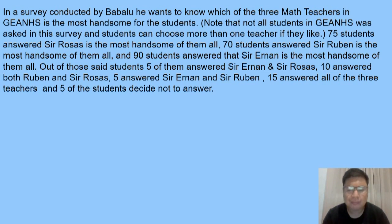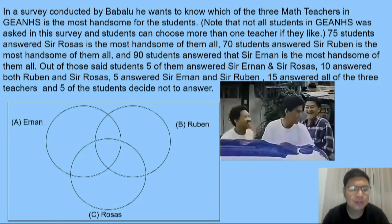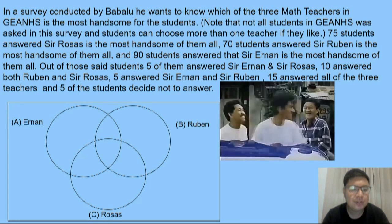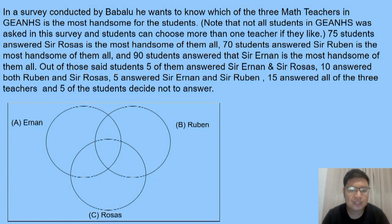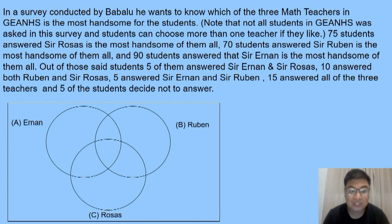In this problem, we'll be constructing a Venn Diagram. This is an example of a Venn Diagram — those three circles represent the teachers. For circle A, we have Sir Ernan. For circle B, we have Sir Ruben. And then circle C, we have Sir Rosas.